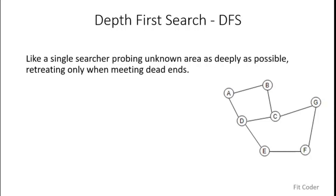Depth first search can be thought of as a single searcher who is probing an unknown area as deeply as possible, retreating only when meeting dead ends. Let's try to understand this with an example. I've taken a graph which has seven vertices. Let's think of this graph as a battlefield and we have a soldier at position A, who wants to explore the battleground to find out if enemies are present. If he goes by the method of DFS, he will pick a direction and go towards it until he meets a dead end.